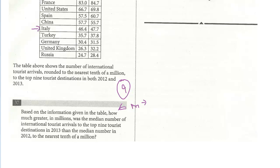It's going to be Italy — that's right in the middle. And we basically just want to know the difference between 2013 and 2012. So this would be 47.4 minus 46.4, to the tenth of a million. Remember with decimals — if we had another number after this, it would be hundredths. And that's it: it's just 1.3. This is a pretty straightforward question. That is the answer.